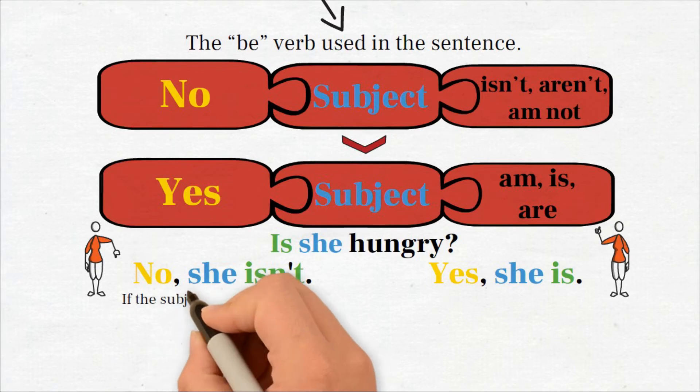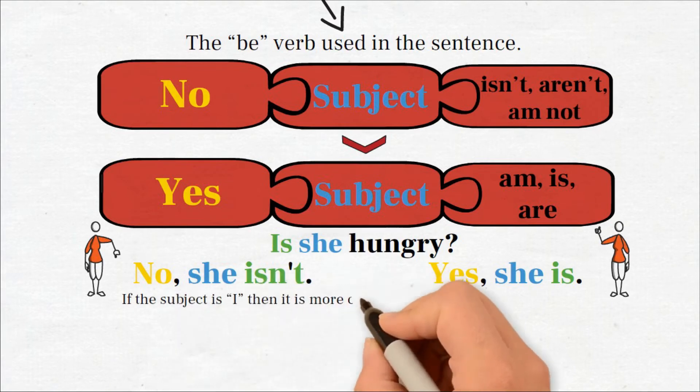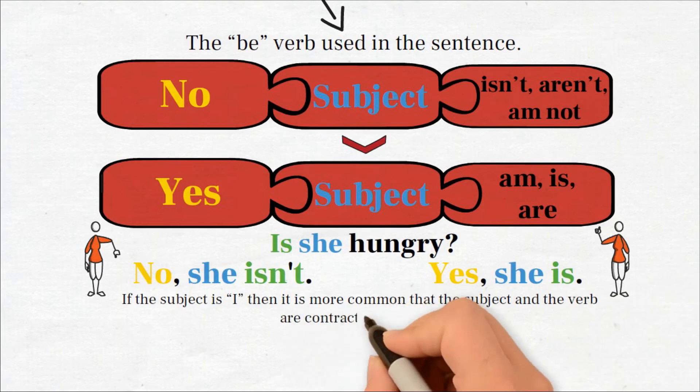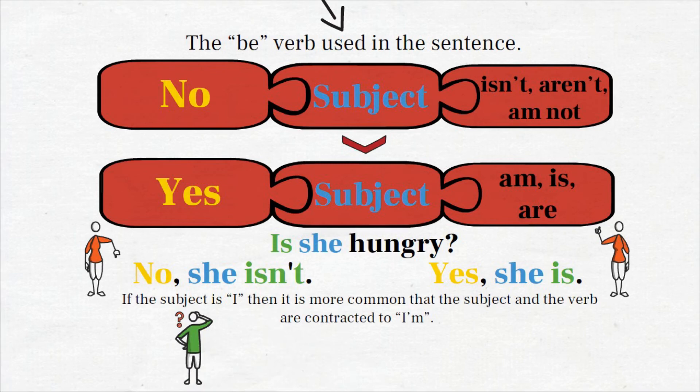If the subject is I, then it is more common that the subject and the verb are contracted to I'm. Are you hungry? No, I'm not.